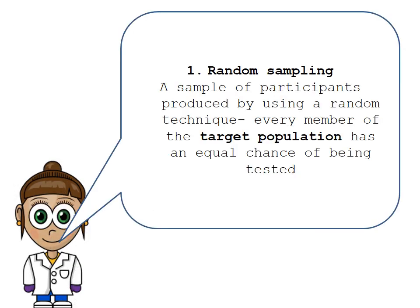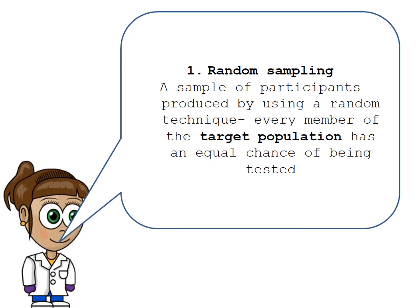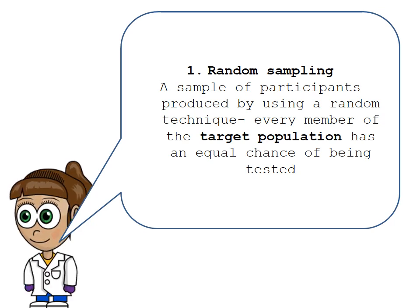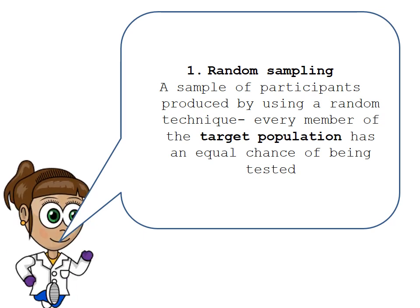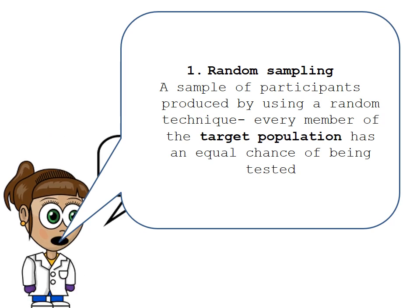There are loads of different types of sampling and we're going to go through each of them today. The first one is random sampling. Random sampling is a sample of participants produced by using a random technique, so every member of the target population has an equal chance of being tested.